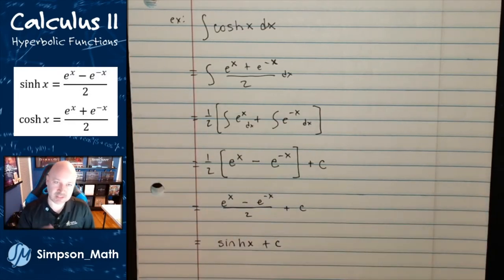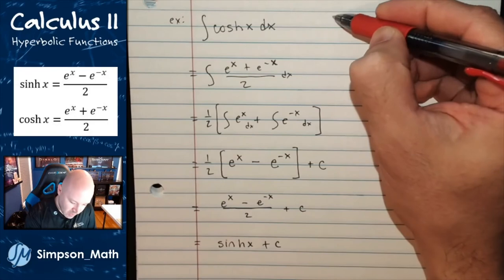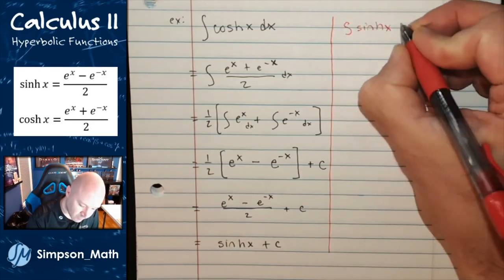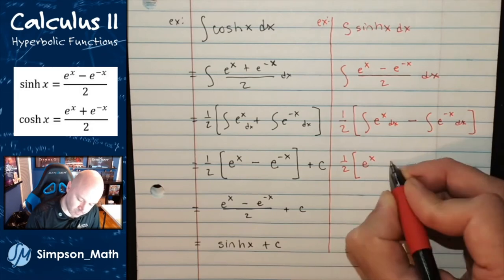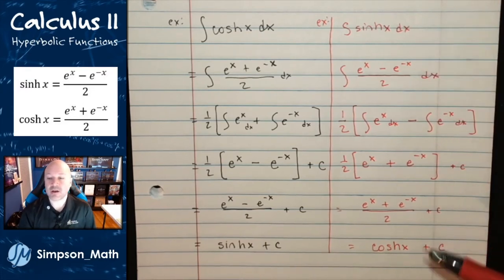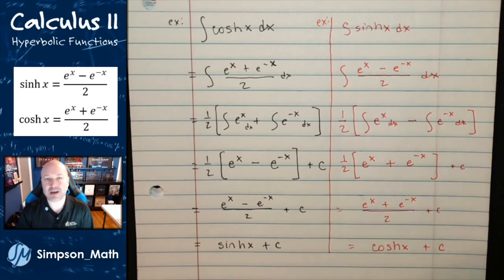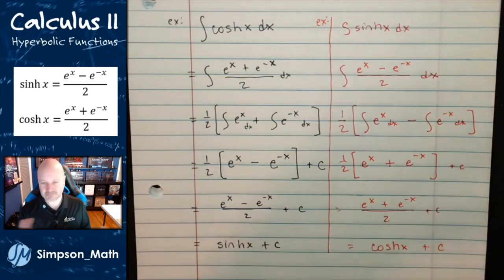So the derivative of hyperbolic cosine is hyperbolic sine, and the integral of hyperbolic cosine is hyperbolic sine. Pause the video and try to integrate sinh. Integrating sinh gives cosh — so there's no negativity dealing with the hyperbolics. The derivative of regular cosine is negative sine, but that doesn't happen with the hyperbolic versions. Cosh and sinh just remain positive with both differentiation and integration.